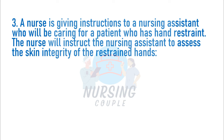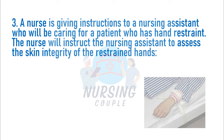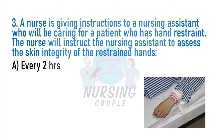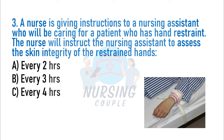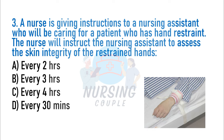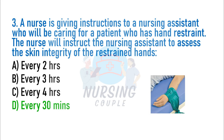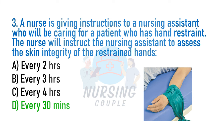A nurse is giving instruction to a nursing assistant who will be caring for a patient who has hand restraints. The nurse will instruct the nursing assistant to assess the skin integrity of the restrained hands: A. Every 2 hours, B. Every 3 hours, C. Every 4 hours, D. Every 30 minutes. The answer is Option D: Every 30 minutes. The nurse or nursing assistant should check restrained hand skin integrity every 15 minutes for the first hour, then every 30 minutes to ensure proper circulation.